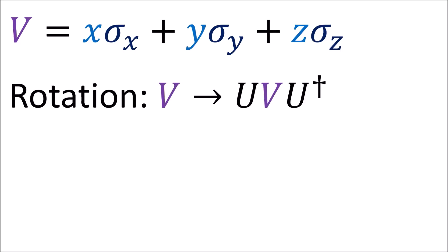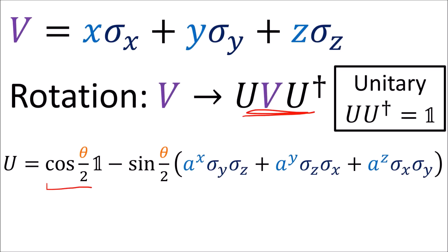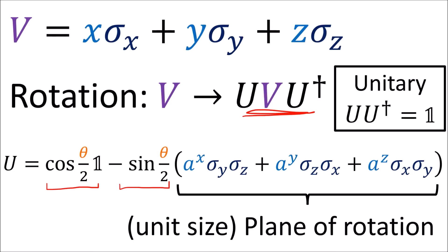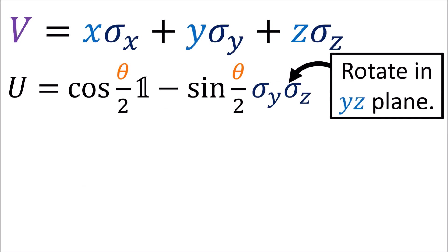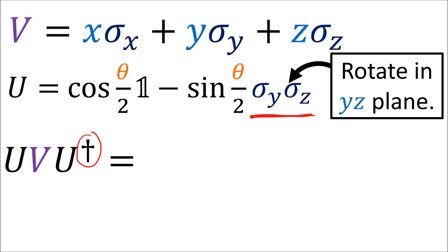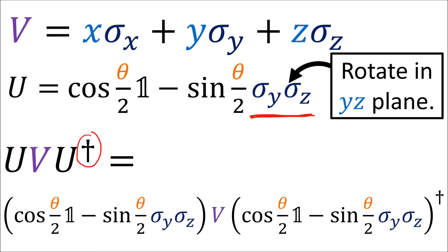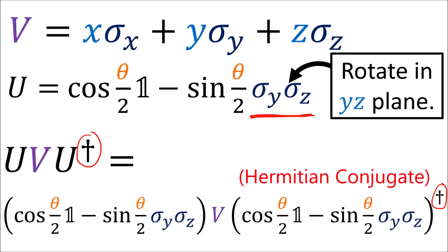The double-sided transformation uses a matrix U which equals cosine theta over 2 times the identity matrix minus sine theta over 2 times the plane of rotation. For example, if we want to rotate in the yz plane in the direction taking y to z, we use sigma y times sigma z. For the matrix on the right half of the double-sided transformation, we take the complex conjugate transpose of U, also called the Hermitian conjugate of U, denoted with the dagger symbol.